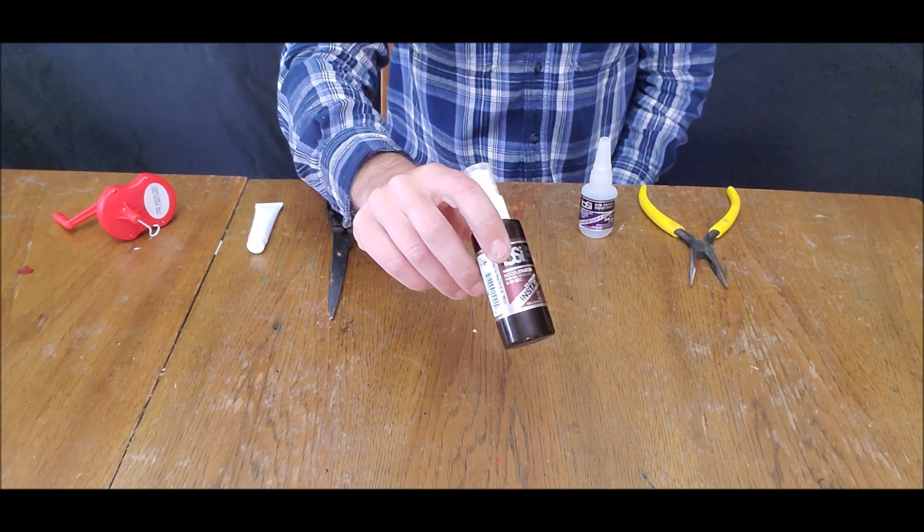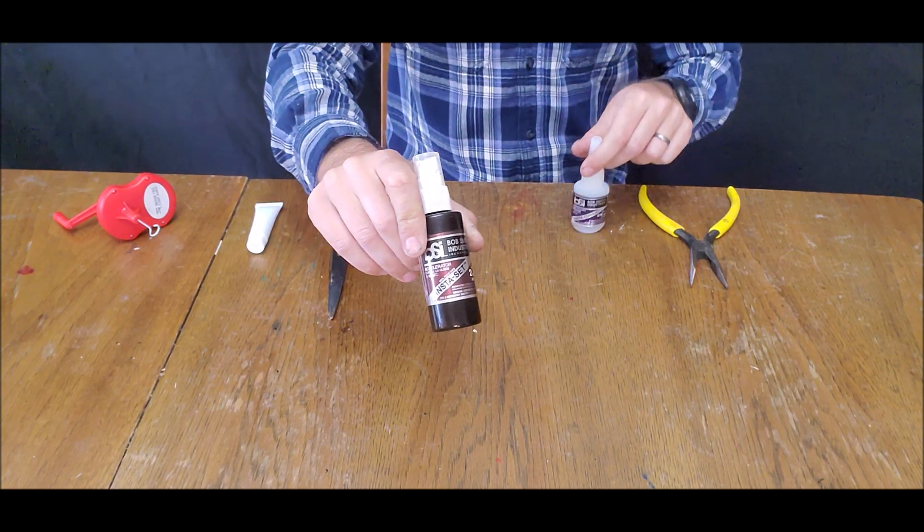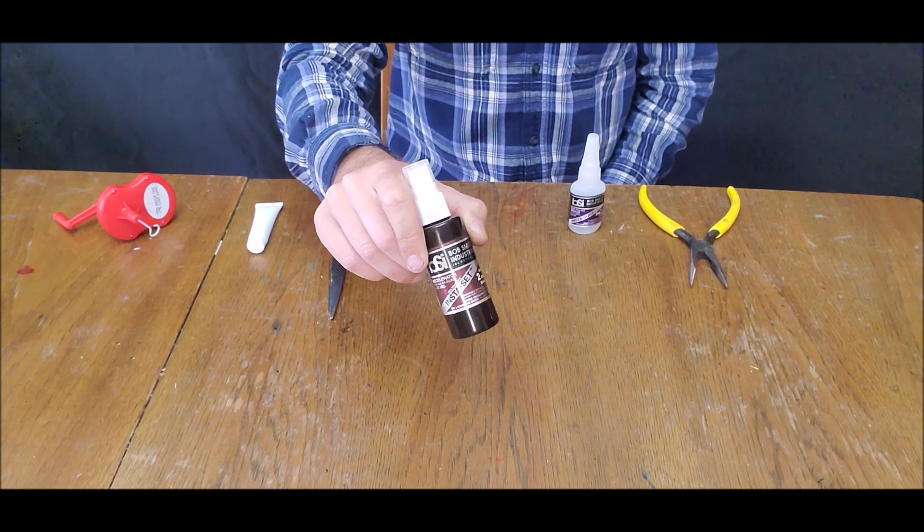We want a bottle of CA accelerator. Zap, which also sells a good quality CA, sells this. This is Bob Smith brand. You can also get mercury or satellite city.